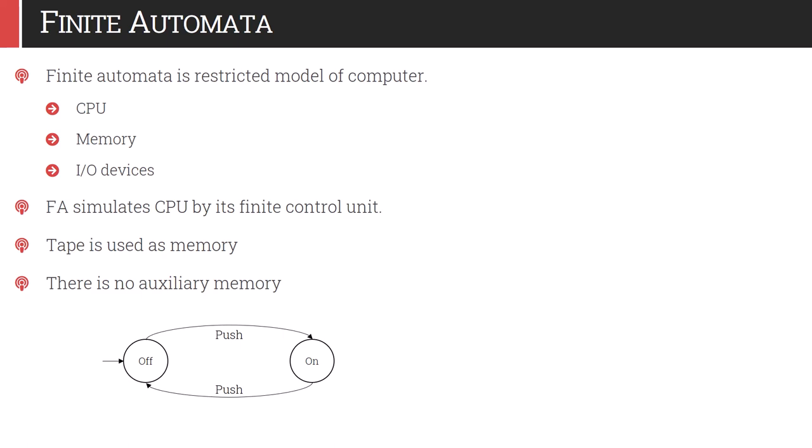Finite automata works based on two principles: what is the current state and what is the current input. For example, a tube light or fan is off right now and the switch is the input parameter. When we press the switch from off to on, the fan will start rotating. The current state of the fan is rotating and the current state of the switch is on. As we change the input from on to off, the fan was in rotation but now it will gradually stop. So current state and current input are very important to understand the behavior of anything.